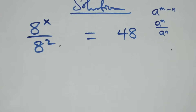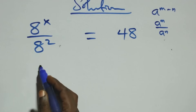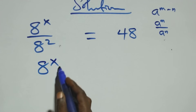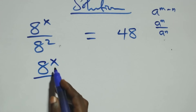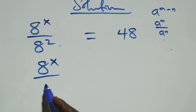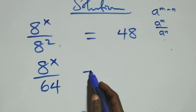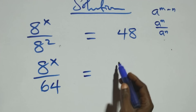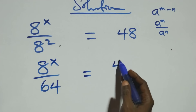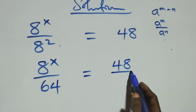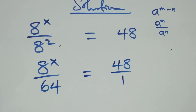In the next step, we can write this as 8 raised to power x over 8 squared, where 8 times 8 is 64. Then it equals, and here we can write this as 48 over 1.